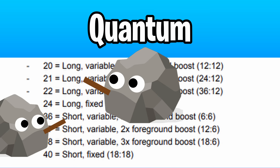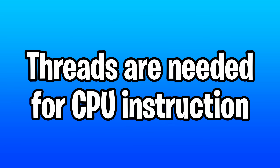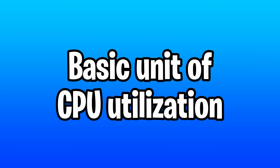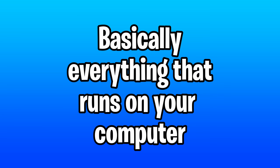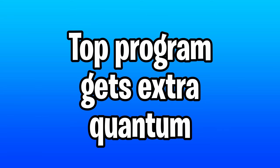Short and long quantum refers to the time that the Windows process scheduler allocates to a thread, which is what a CPU needs to execute a stream of instructions — it's the basic unit of CPU utilization, so in other words it's literally everything that runs on your computer. And then the last thing we need to know is foreground boost, which gives the program on the front of the screen extra quantum time up to two or three times, depending on the setting.